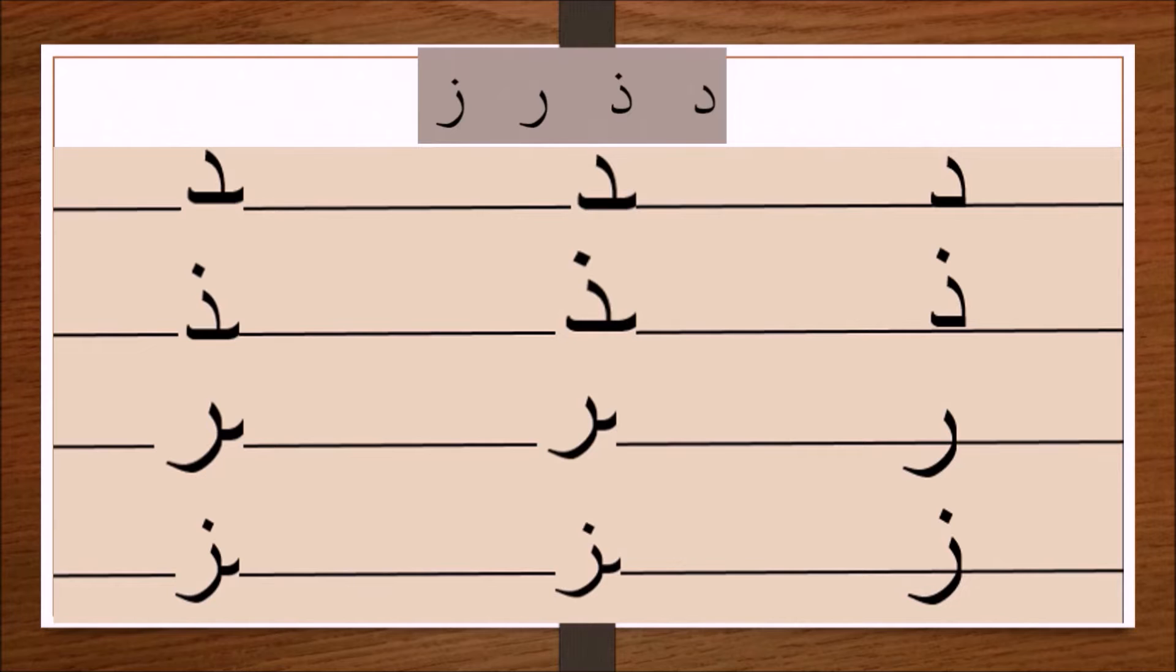Bismillahirrahmanirrahim. Having explained the shapes of the letters Jim, Ha, and Kha at their different positions in Arabic words in the last lecture, I shall now proceed with the explanation of the letters Dal, Dhal, Ra, and Zay. These four letters have two things in common.